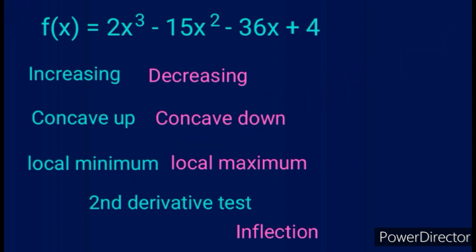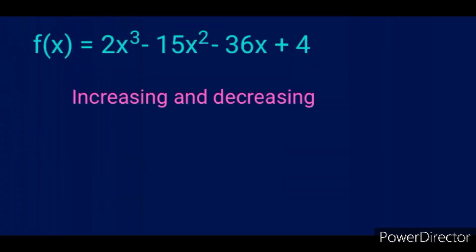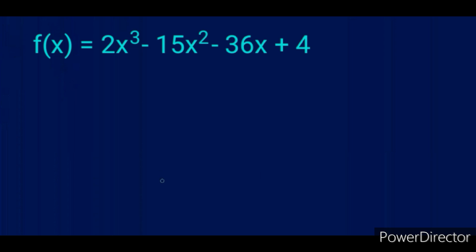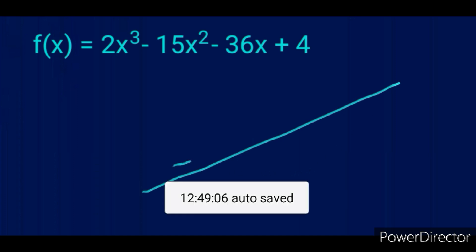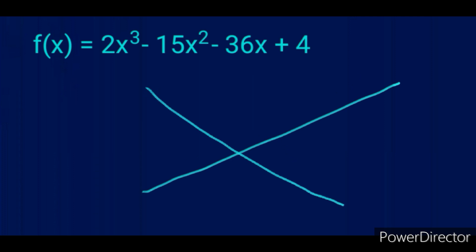So let's begin. First let's talk about where is the graph increasing and decreasing. How do you tell whether the graph is increasing or decreasing? Notice, this graph is increasing because when you follow this graph using your fingers from left to right, you will notice that the finger is going up. And this line is decreasing because when you follow the graph from left to right, you will realize that your finger is going down. Meaning that the graph is decreasing.